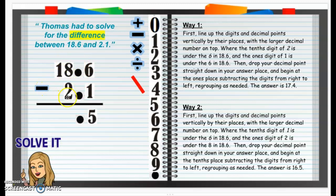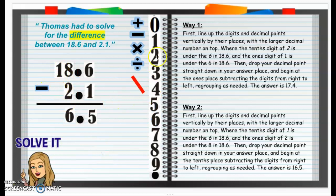Now, 8 minus 2 is 6. And then we have 1 minus 0, which is going to be 1. So our answer is going to be 16 and 5 tenths.